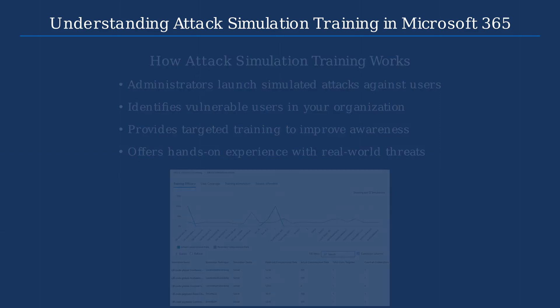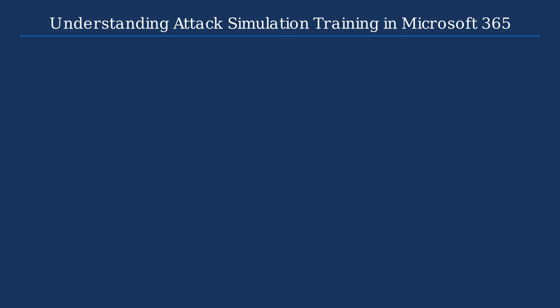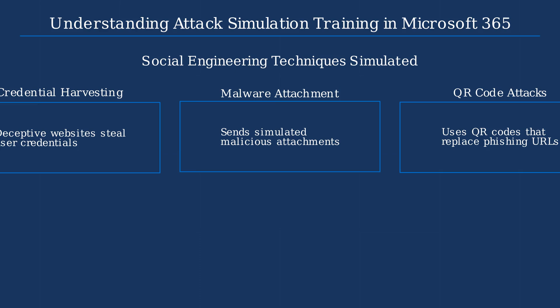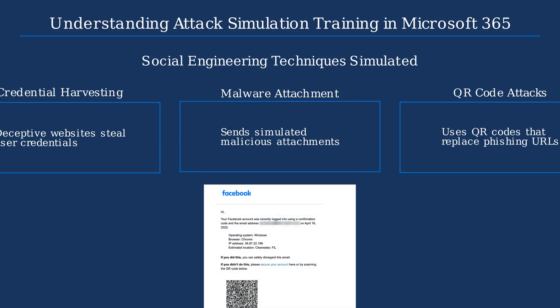ATT&CK Simulation Training leverages various social engineering techniques based on the MITRE ATT&CK framework. These techniques include credential harvesting, where deceptive websites attempt to steal user credentials, malware attachments that simulate malicious files, and QR code attacks — a newer technique that uses QR codes to replace traditional phishing URLs. Here's an example of a sophisticated phishing attempt that includes a QR code. These attacks are becoming increasingly common and can be particularly effective because they bypass traditional link scanning technologies.